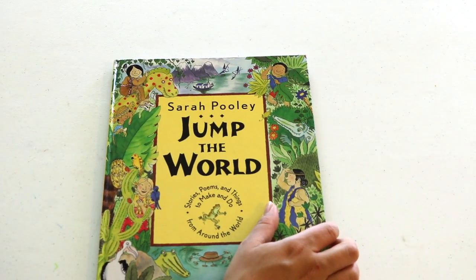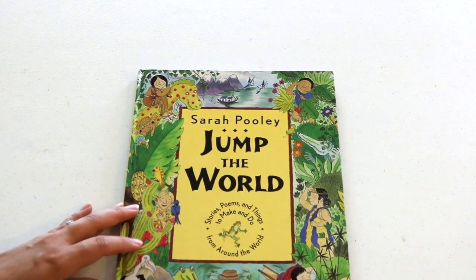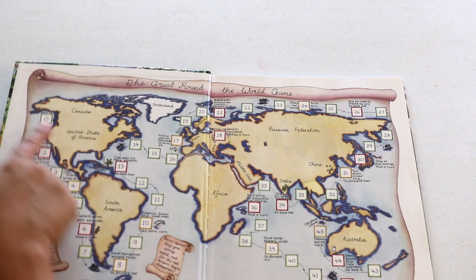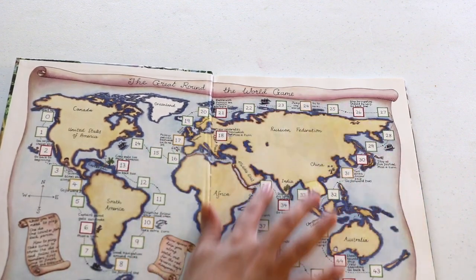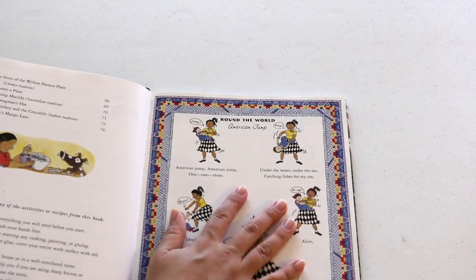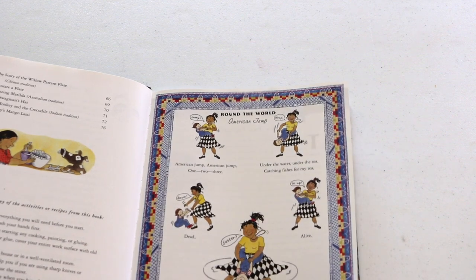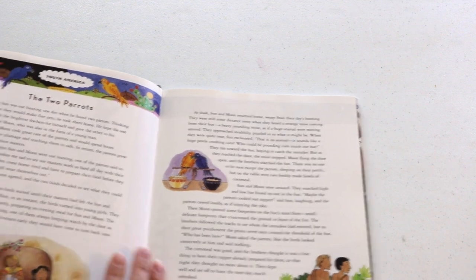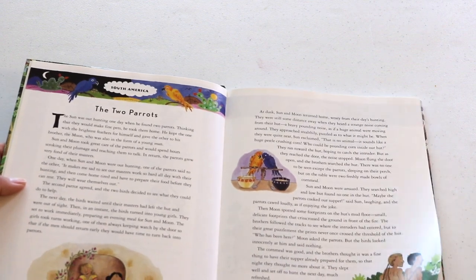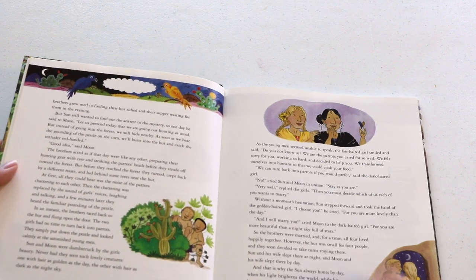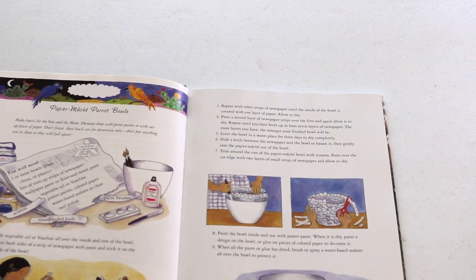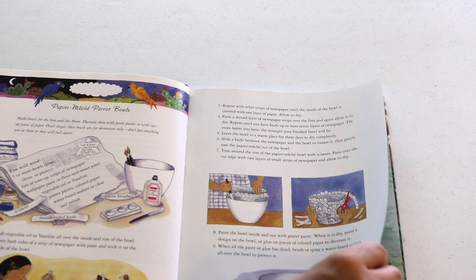Jump the World: Stories, Poems, and Things to Make and Do from Around the World. This is a really unique book. It begins as like a game board, so you start at number one and you make your way around the map, so around the world. It also begins with an opening like chant and dance, and then you have different stops throughout the world. So the first stop is in South America, and just like this stop, every other stop also it has a short story and then followed by either a craft or a recipe.